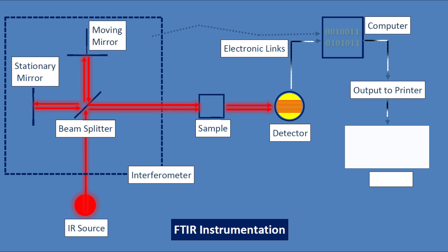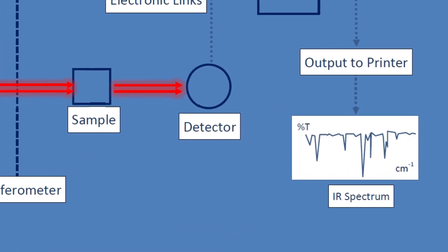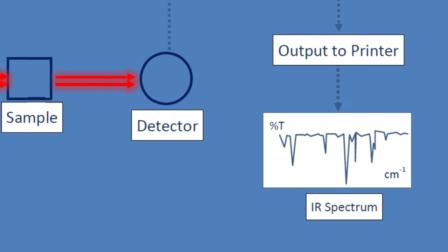The computer software then produces a graph of percentage transmission against frequency or wavenumber. And this graph, called the IR spectrum of the sample, is what the chemist interprets.